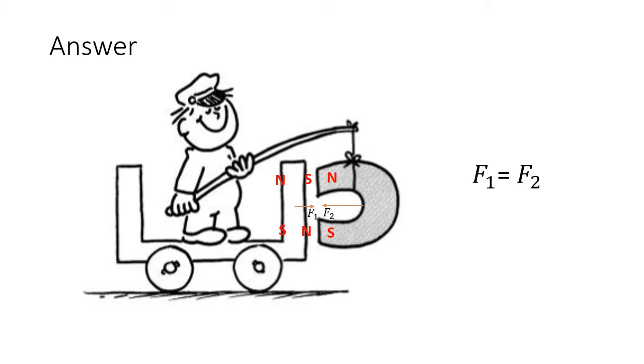Every action has equal and opposite reaction. So the force on the car is equal and opposite to the force on the magnet, so they cancel out. So it doesn't move.